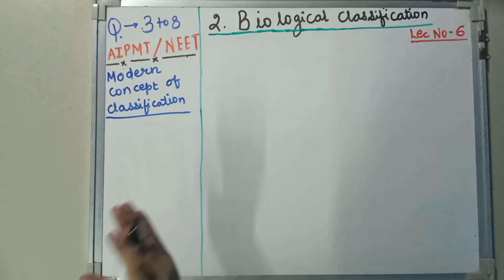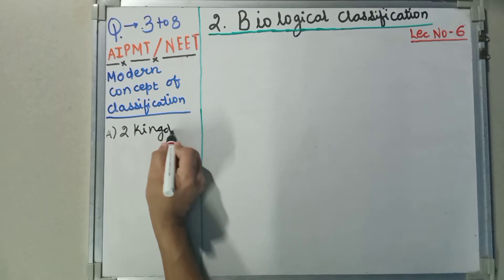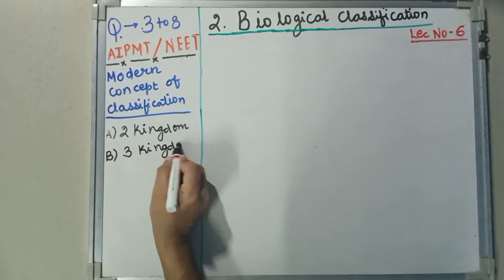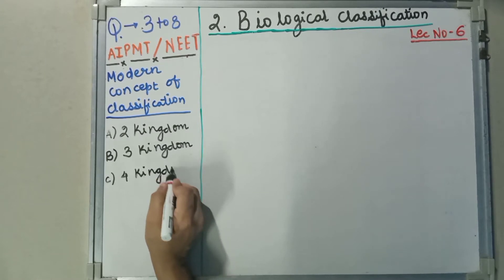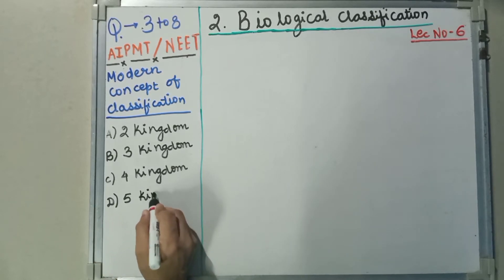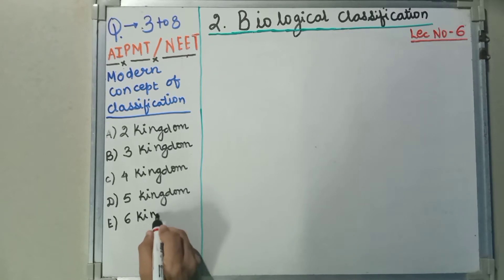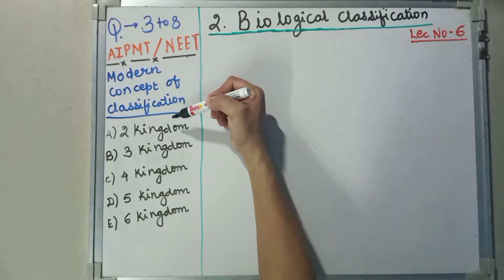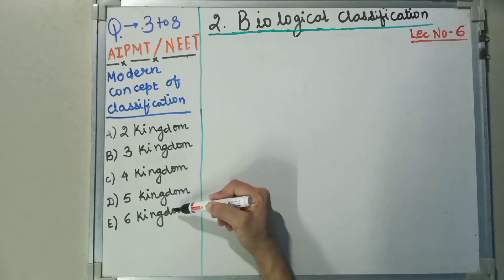In the modern concept of classification, we are going to see two kingdom classification, three kingdom classification, four kingdom classification, five kingdom classification, and six kingdom classification in detail.